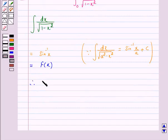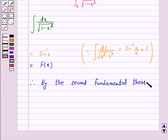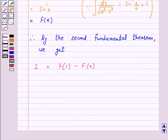Therefore, by the second fundamental theorem, we get I is equal to F(1) minus F(0). So this is equal to sin inverse 1 minus sin inverse 0.